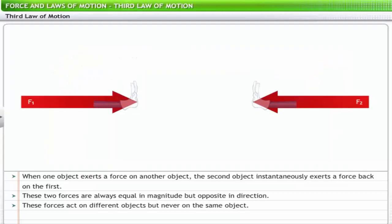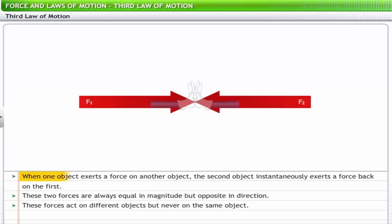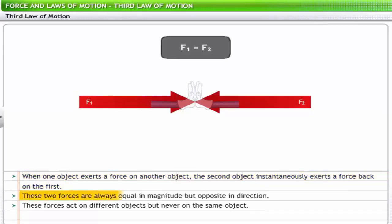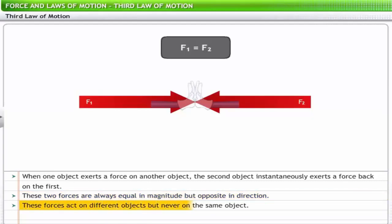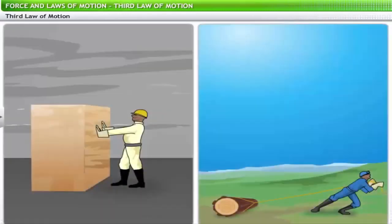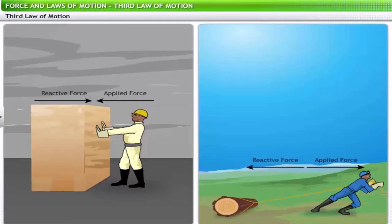Newton's third law of motion, also known as the law of reactive forces, states: when one object exerts a force on another object, the second object instantaneously exerts a force back on the first. These two forces are always equal in magnitude but opposite in direction, and they act on different objects — never on the same object. If we push an object it pushes us back, and if we pull it, it pulls back with a force of equal magnitude.